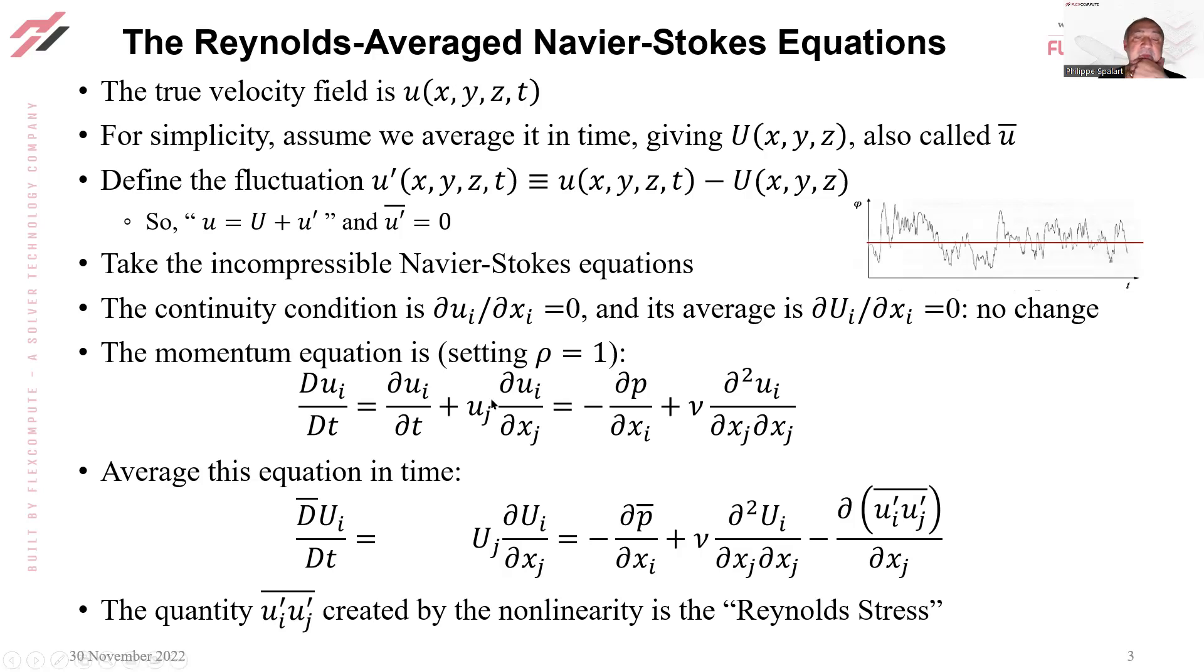Now let's look at the momentum equation. The material derivative of Ui, which is the linear derivative plus the convection term, is made up of the pressure term and the viscous term.